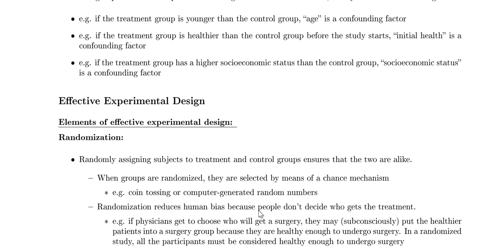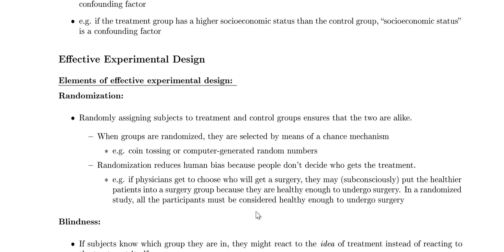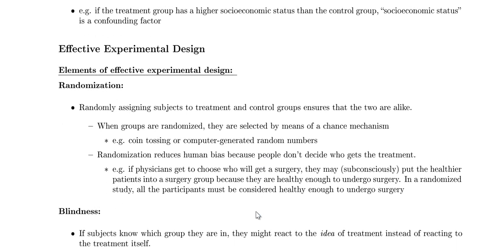So we've talked about one bad study — now let's talk about how to design effective studies. One of the most important factors is randomization. If we can randomly assign a subject to the treatment and control groups, we ensure a better chance that the two groups are similar. When groups are randomized, we're selecting them with some means of a chance mechanism — for example, coin tossing or computer-generated random numbers.